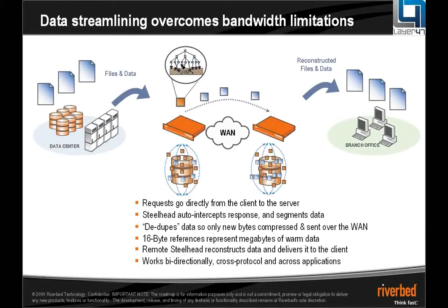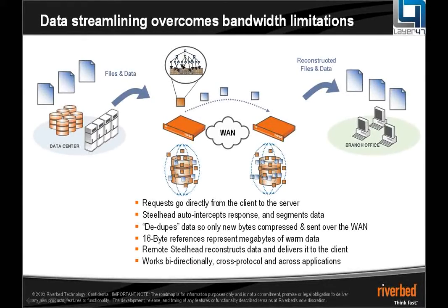The reference itself is 16 bytes in size and can refer to several megabytes of data at a time. We actually start to build references that refer to other references — a tree-like structure that goes up to the fourth level. At the very top level, one 16-byte reference can refer to a whole bunch of references underneath, and then the raw data at the bottom. So it's not unreasonable to expect several megabytes of data to be sent across the network as a single 16-byte reference.